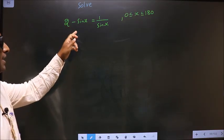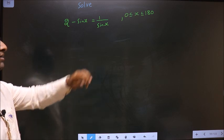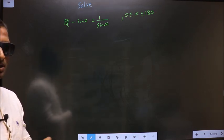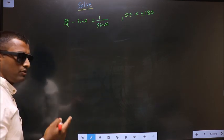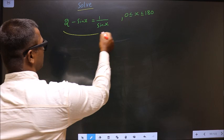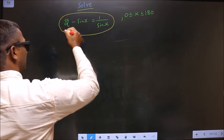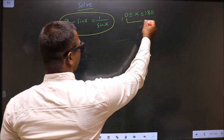Solve 2 minus sin x equals 1 by sin x, where x lies in the interval 0 to 180 degrees. Here they told you to solve, so you should find the values for x satisfying this equation, and it should lie in the interval 0 to 180.